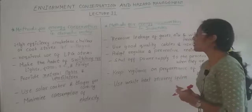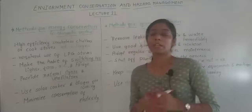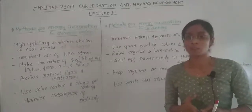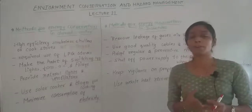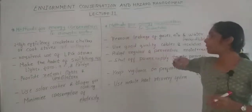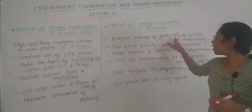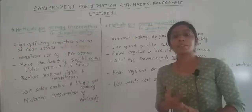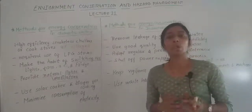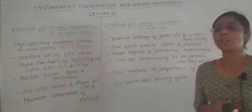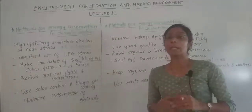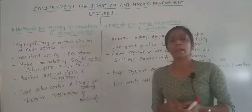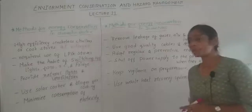Now, methods for energy conservation in industries. In industry, they mostly use electricity and mechanical instruments, which require large amounts of energy. One method is to remove leakage of gases, air, and water immediately. If you have knowledge that some kind of leakage has occurred, you need to remove it immediately so you can conserve water, air, and other energy sources.